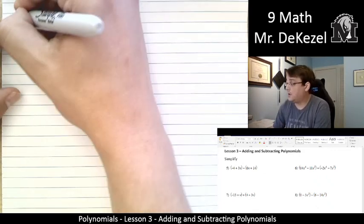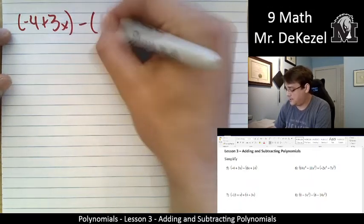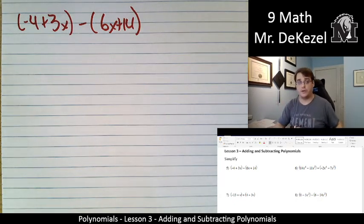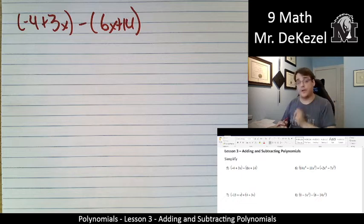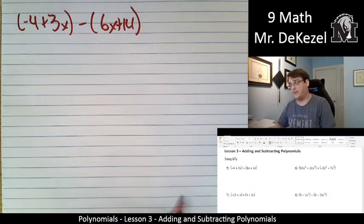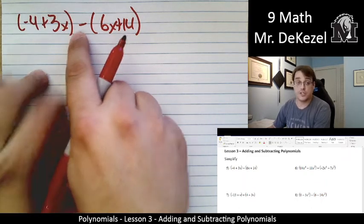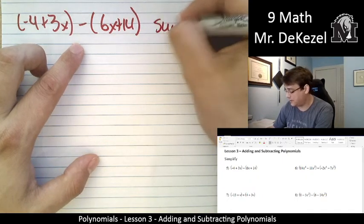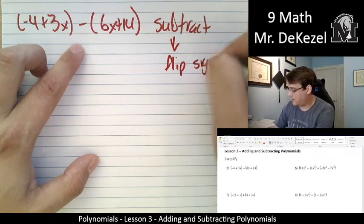We have our first problem. Minus 4 plus 3x in brackets, minus 6x plus 14. These brackets represent that we have a binomial subtracting a binomial. The order of the terms doesn't really matter, but we are subtracting the whole thing on the right from the left. When we're subtracting, we flip the sign of the second polynomial.